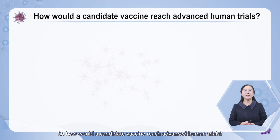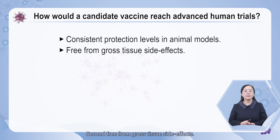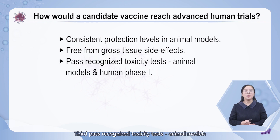So how could a candidate vaccine reach advanced human trials? First, consistent protection levels in animal models should be achieved. Second, free from gross tissue side effects. Third, passed recognized toxicity tests in animal models and human phase 1.